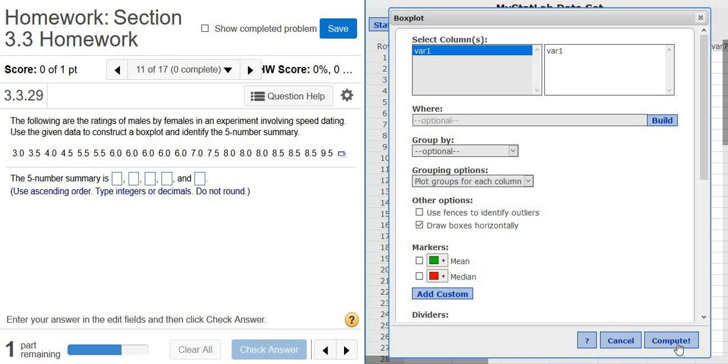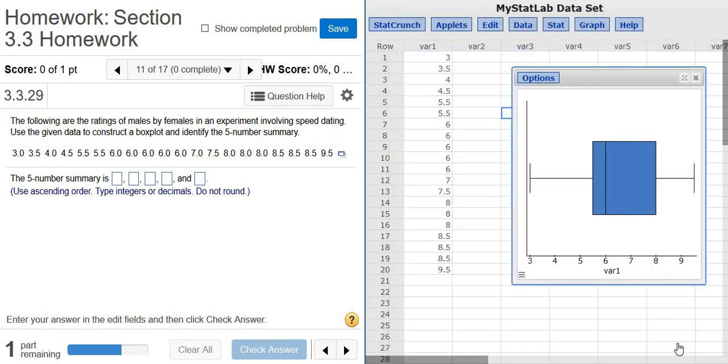Then click Compute, and it gives you a picture of the box plot. So to find the answers, you just hover over the box plot. So you see the minimum, that's the first number in the five-number summary. So three, that comes first.